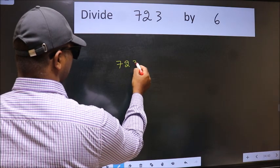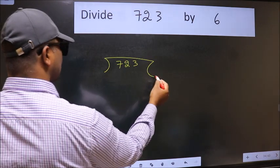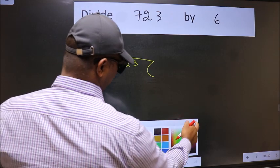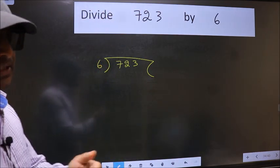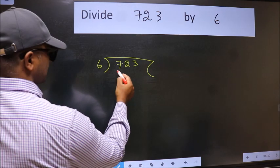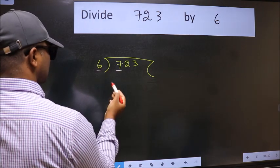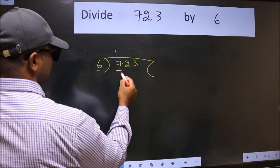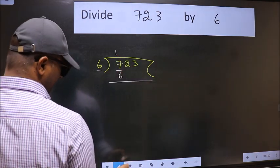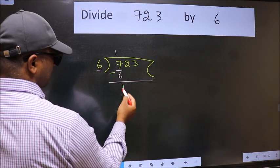723. 6 here. This is your step 1. Next, here we have 7 and here 6. A number close to 7 in the 6 table is 6. 6 times 1 is 6. Now we subtract. We get 1.